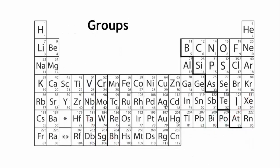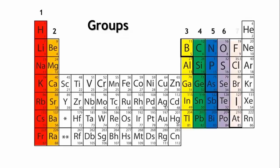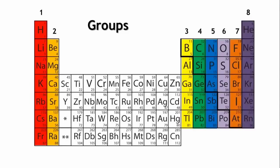The columns going down, from top to bottom, are the groups. Elements in the same group also have something in common. Elements in the same group have the same number of electrons in their outermost shell.